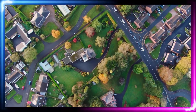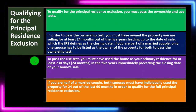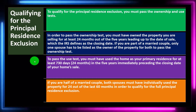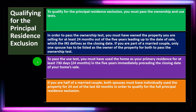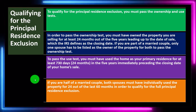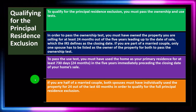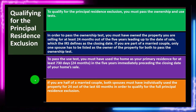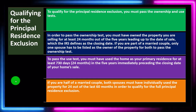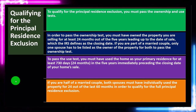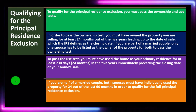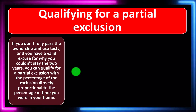Things can get more complex in that kind of scenario, and you can come up with more complex strategies that may be beneficial under certain circumstances. If you are half of a married couple, both spouses must have individually used the property for 24 out of the last 60 months in order to qualify for the full principal residence exclusion. It can get more complicated in unusual circumstances — going from single to married, divorced, and so on — and you could dive into that in more depth in certain situations.